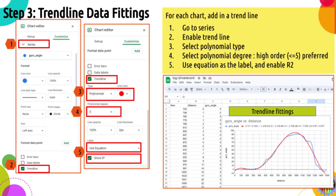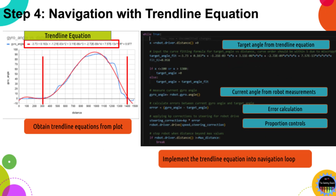Now we can implement the trend line equation into the navigation loop. Here, based on the distance the robot travels, we can use the trend line equation to calculate a target angle for where the robot is heading. Then we can measure the current robot heading angle, and find the errors between the current one and the target one. We then apply proportion control to make sure the robot always follows the target angles by correcting these errors. Please note, based on how we train the robots, we might want to keep the gyro angle at zero for the first 300 millimeters, and the last 100 millimeters.